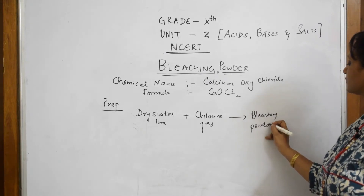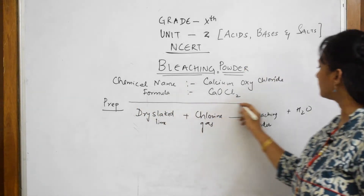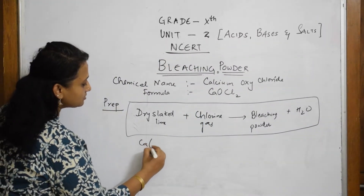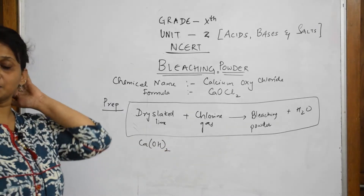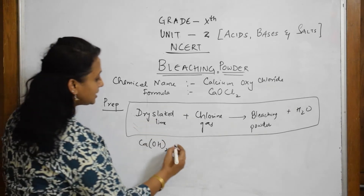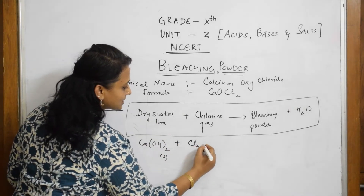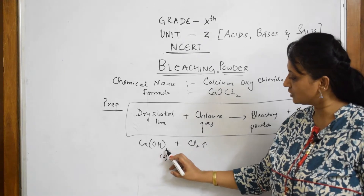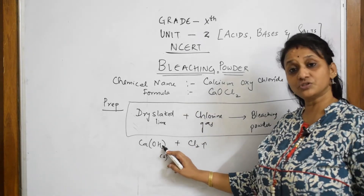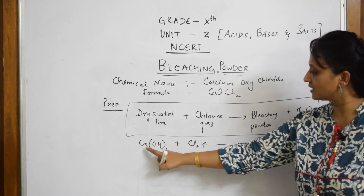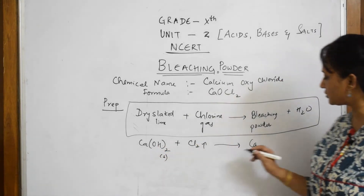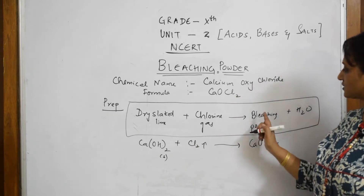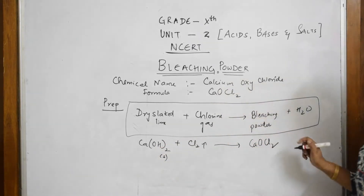Along with bleaching powder you also get water. Let us write the whole formula. Dry slaked lime means calcium hydroxide Ca(OH)₂, which is solid, reacts with chlorine gas Cl₂. Calcium, one oxygen, one chlorine and two chlorines gives CaOCl₂ — that is bleaching powder. What is left out is H₂ and one oxygen, written as H₂O in liquid form.